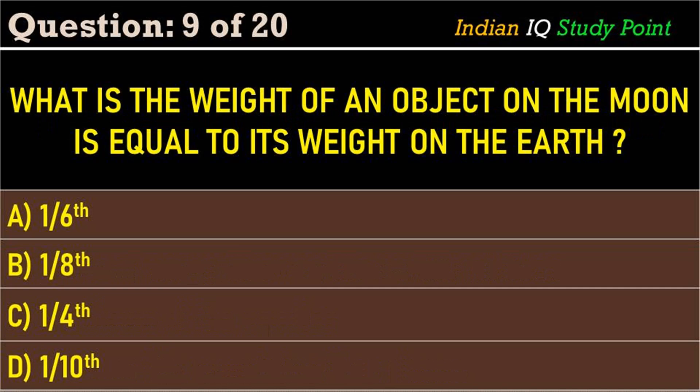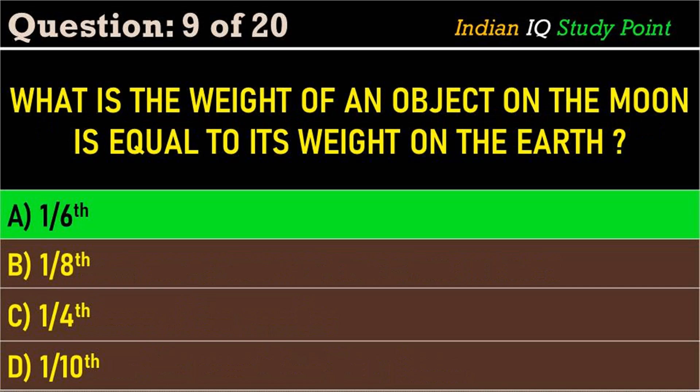Coming to the next question: the weight of an object on the moon is equal to what fraction of its weight on the earth? Option A: one-sixth. Option B: one-eighth. Option C: one-fourth. Option D: one-tenth. The correct answer is option A: one-sixth.